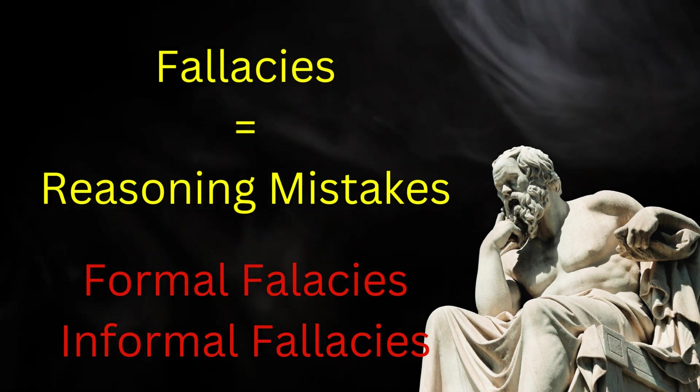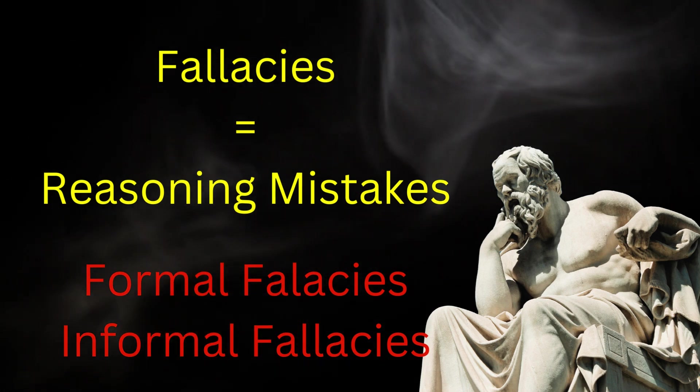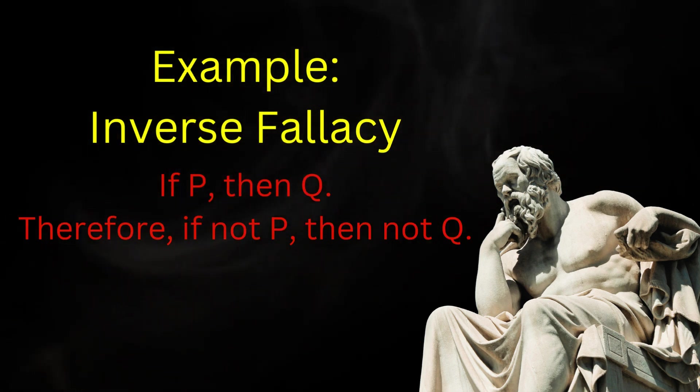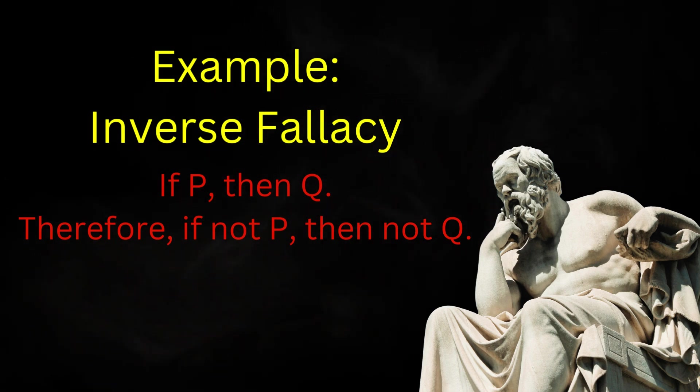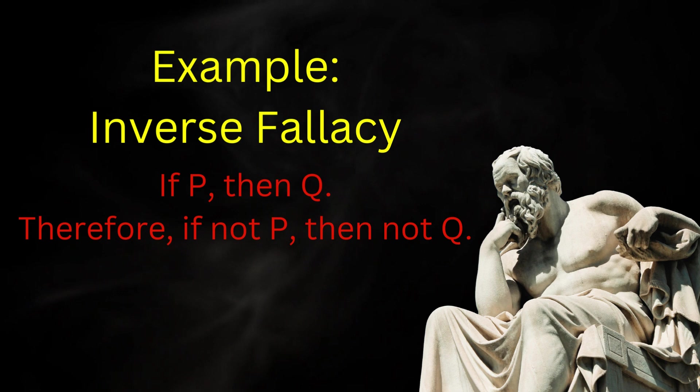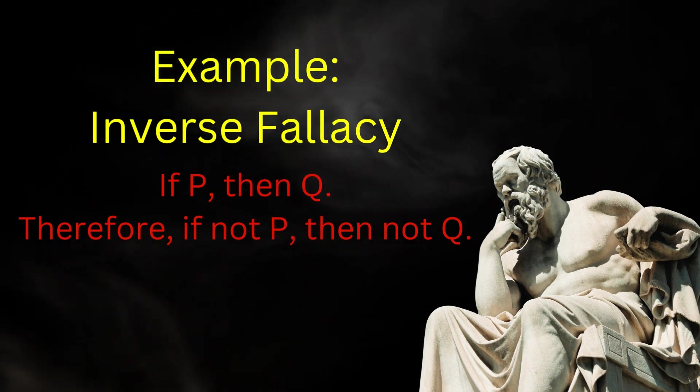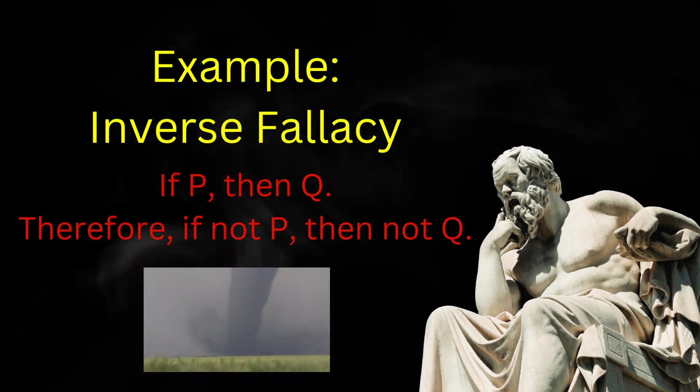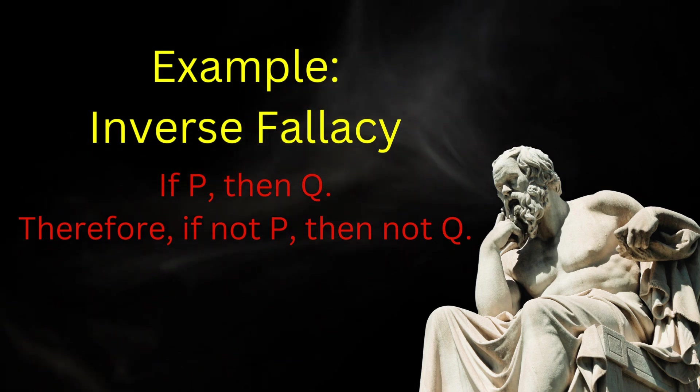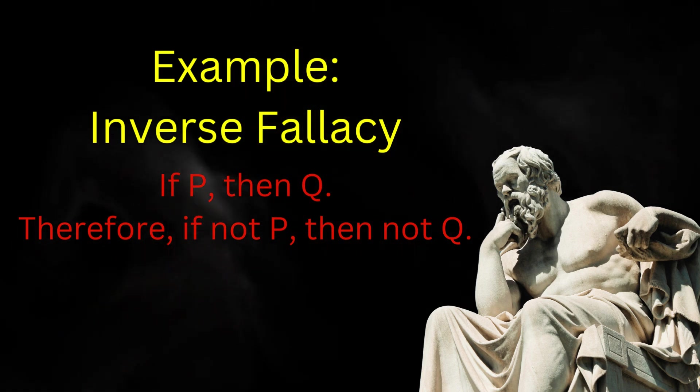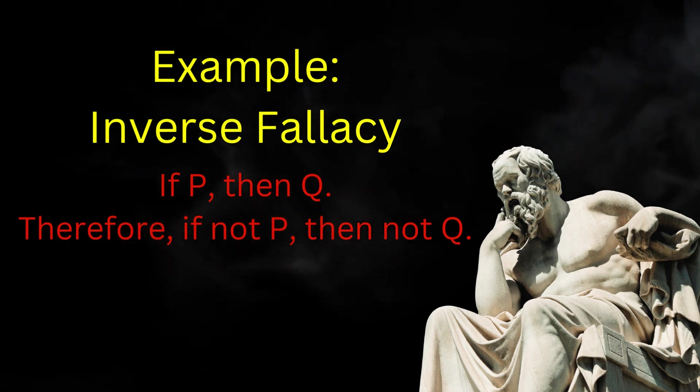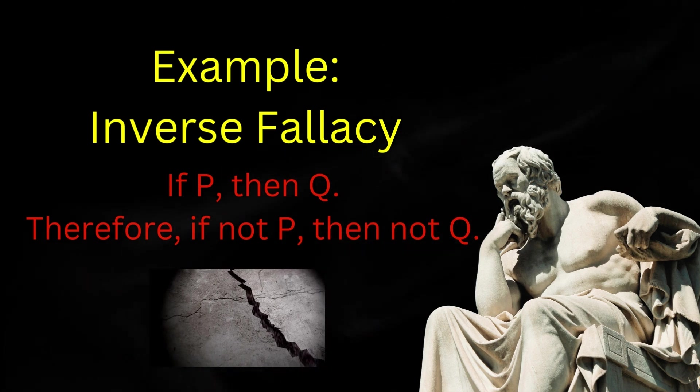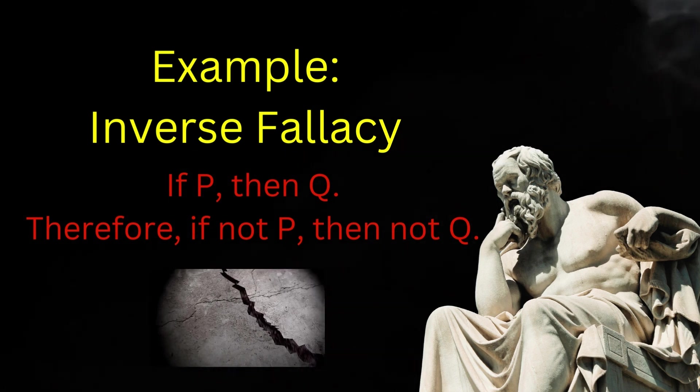Formal fallacies are mistakes in reasoning related to that third act of the mind. For example, denying the antecedent, also known as the inverse fallacy, is a formal fallacy of the structure if P then Q, not P, therefore not Q. For example, if a tornado were hitting my house (P), then my house would be shaking (Q). But there is not a tornado hitting my house (not P), therefore my house is not shaking (not Q). Such is a mistake in reasoning, because denying the antecedent, meaning there is no tornado hitting my house, does not rule out the possibility of your house shaking, since effects can sometimes have multiple causes. For example, perhaps an earthquake is occurring.